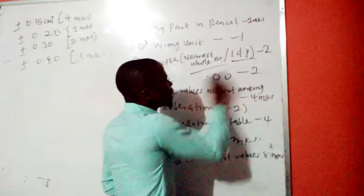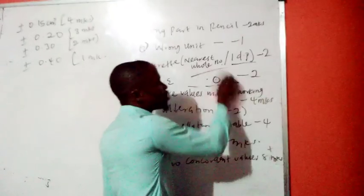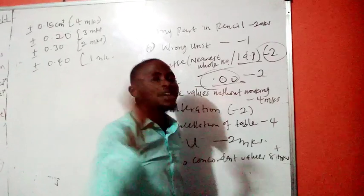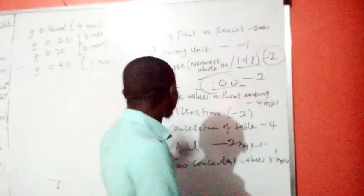To one decimal place or to the whole number. It must be to two decimal places. If it is to one decimal place or to a whole number, you are going to have a mark of two deducted from your score.